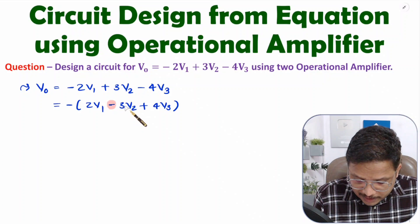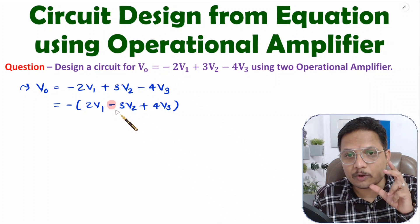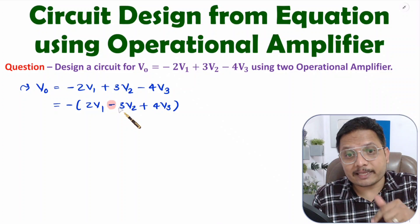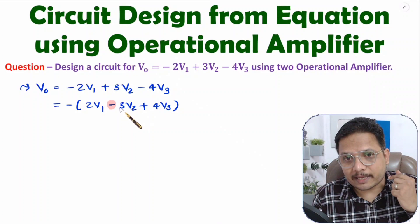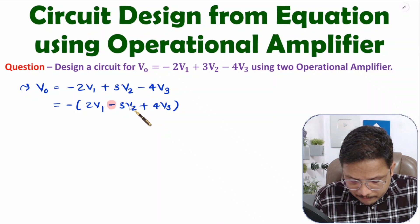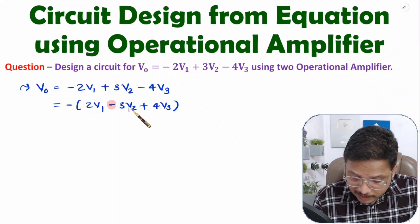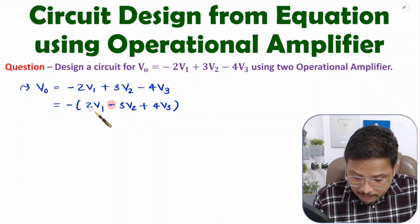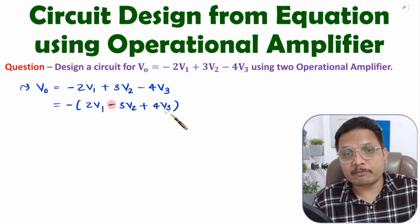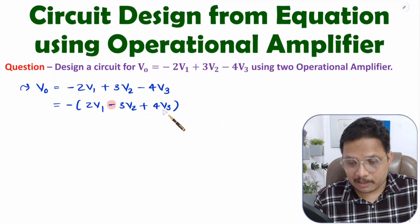V0 has a negative sign overall, so first we need to convert that. In the first block, we will convert V2 into minus V2. After that, V1 and that minus V2 and V3 will be given to the scaling with inverting configuration.